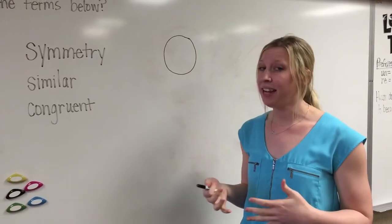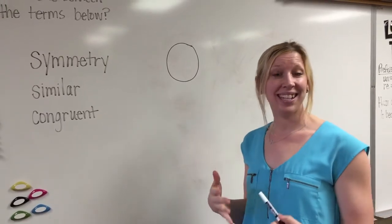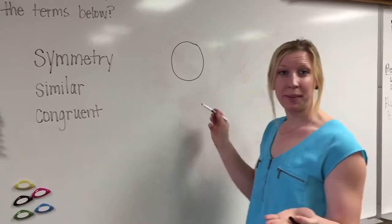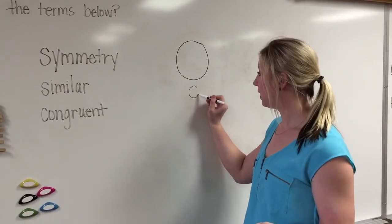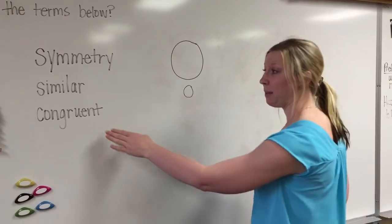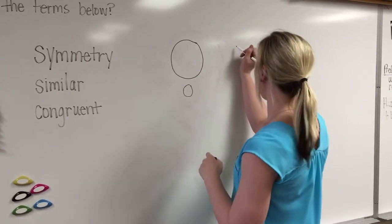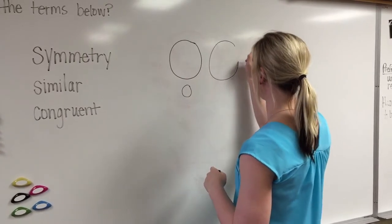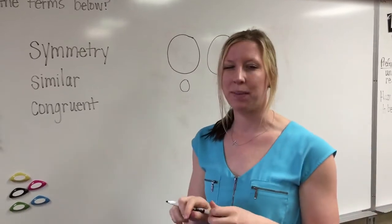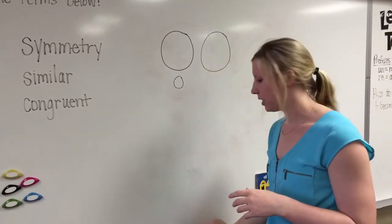So congruent is kind of like similar, but this time we're gonna have the same shape, and it has to be the same size. So I have my circle here. If it was gonna be similar, it would still be a circle, but it might be a different size. If it's gonna be congruent, it has to be the same shape and the same size. Now I'm drawing a circle with my free hand, so it might look a little bit different, but you guys understand the idea.